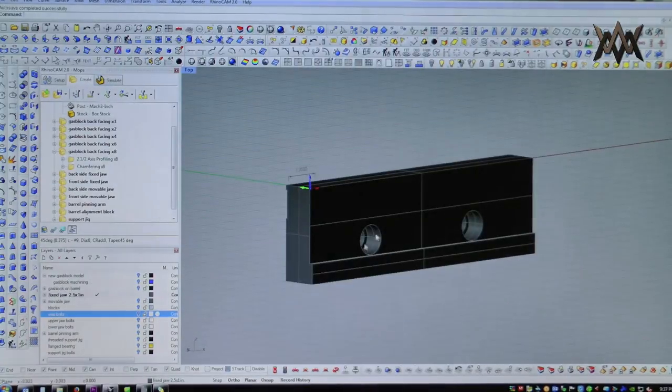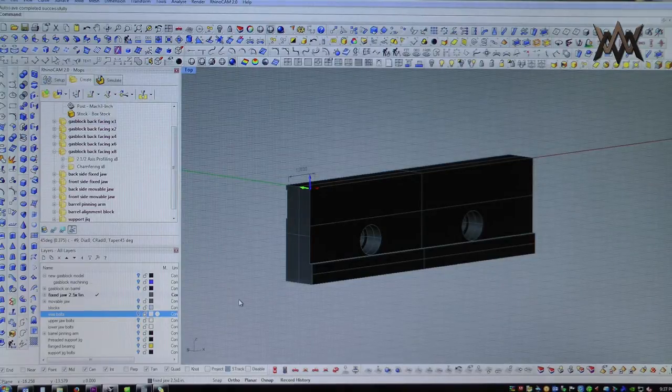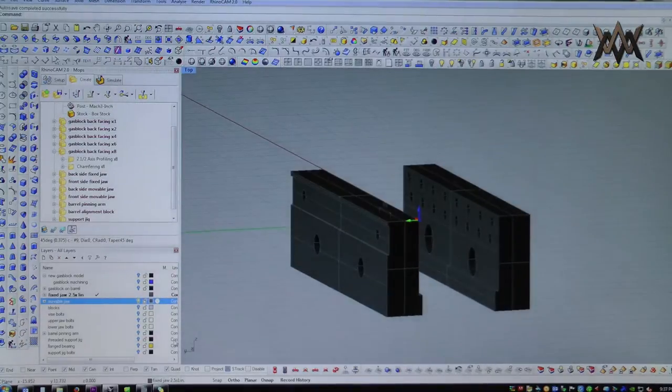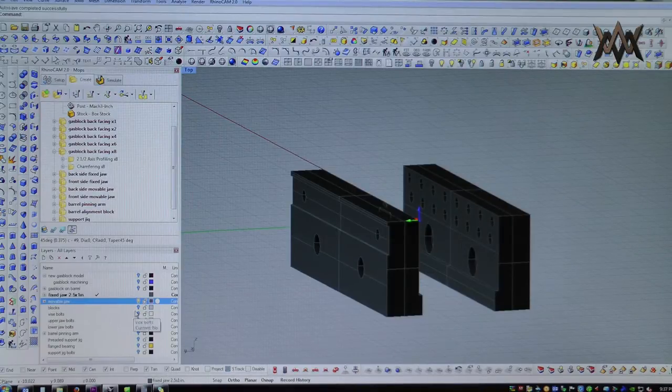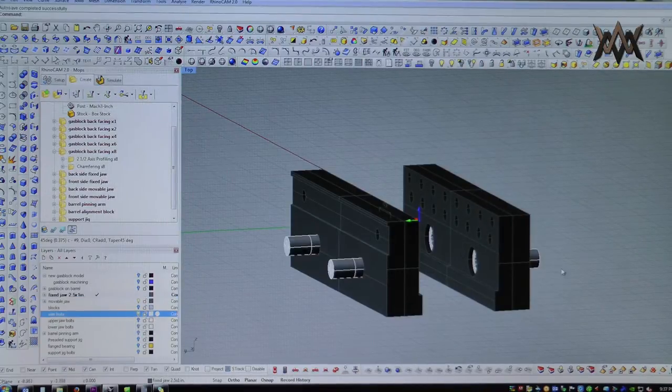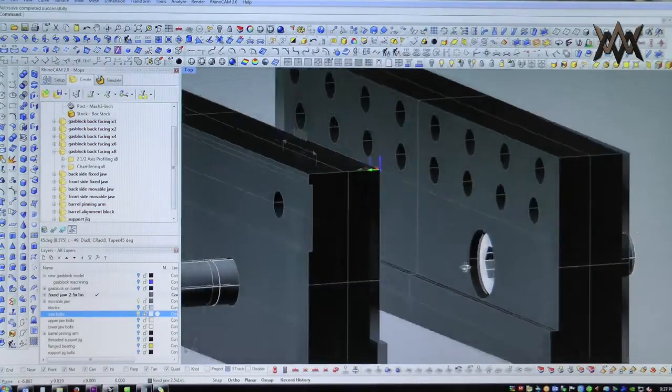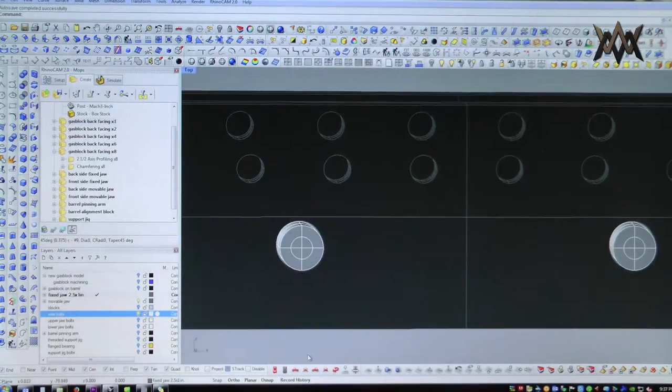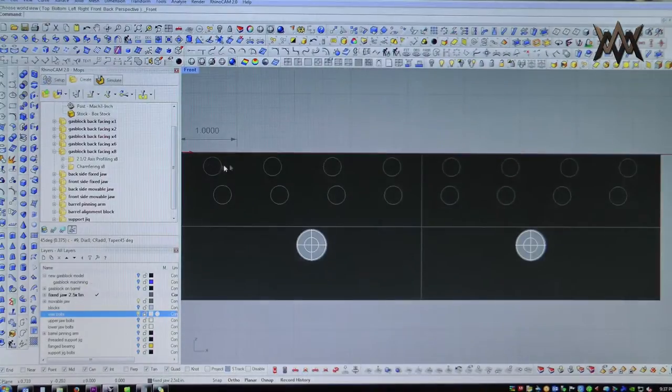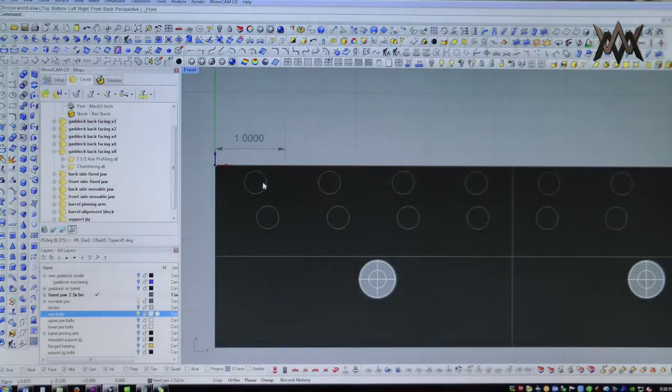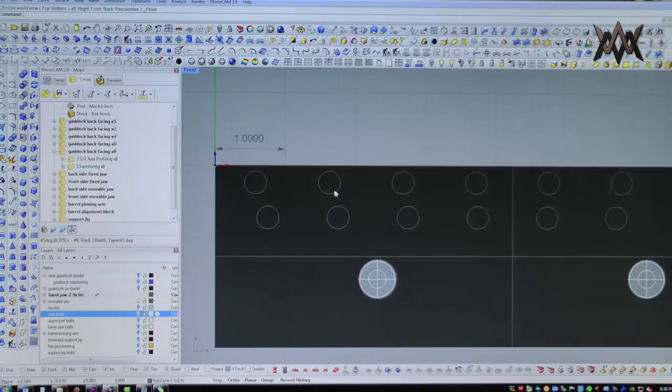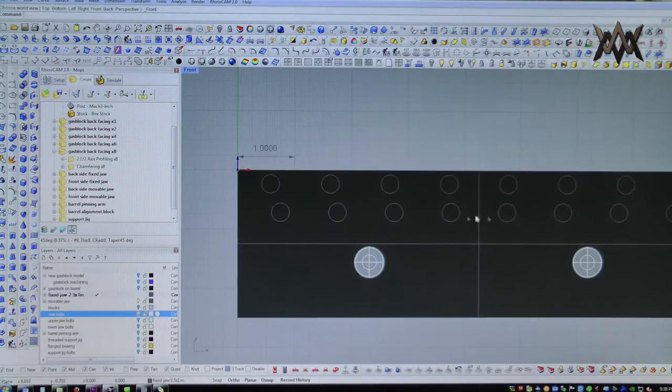Where it got complicated was with the movable vise jaw. I'll go ahead and turn that one on. As you can see, it's a similar setup with the parallel as the fixed vise jaw, and the bolt heads are recessed obviously. The difference is, this one has a whole bunch of holes in it. It has eight holes across the top and eight holes across the bottom, and they're spaced a little bit differently. The holes across the top are 1.05 inches apart, and the holes across the bottom are 1 inch apart. For this video, we're just going to talk about the top holes.